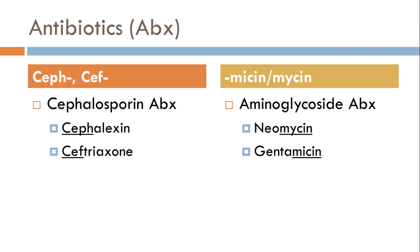Cephalosporin antibiotics start with 'ceph' — c-e-p-h — and many times it's written c-e-f, as in Frank. I have cephalexin; the brand name for that is Keflex. Another one is ceftriaxone; the brand name is Rocephin. It's injectable only, so you're more likely to see that in an institutional pharmacy like a hospital rather than a retail pharmacy.